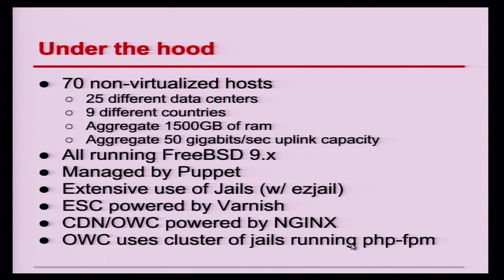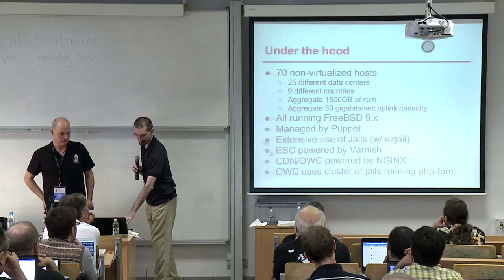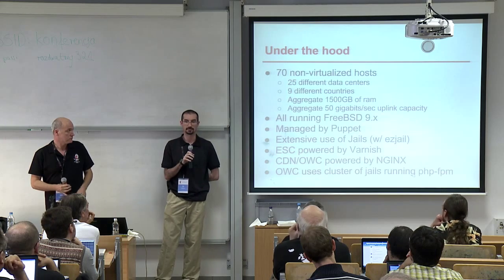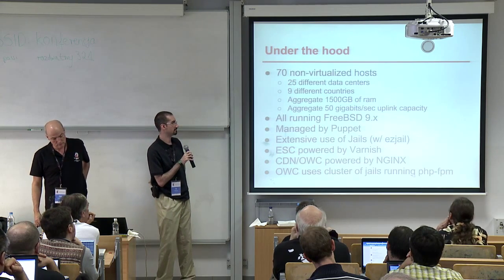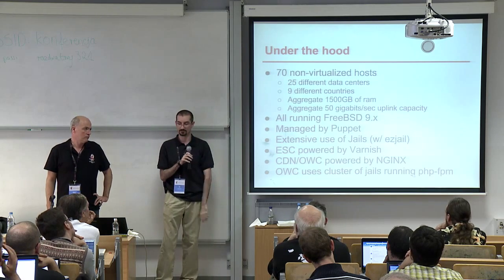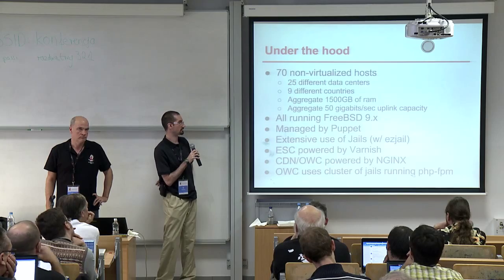At the moment we have about 70 servers spread across 25 different data centers in nine different countries. Balancing the load between those and dealing with failures started to become much more of an administrative headache, and we looked at ways to automate it. In aggregate we can push about 50 gigabits per second to the internet. All hosts run FreeBSD 9 and are managed with Puppet. We also make extensive use of jails with EasyJail to deploy the same containerized config across different hosts and to move things between hosts when required.